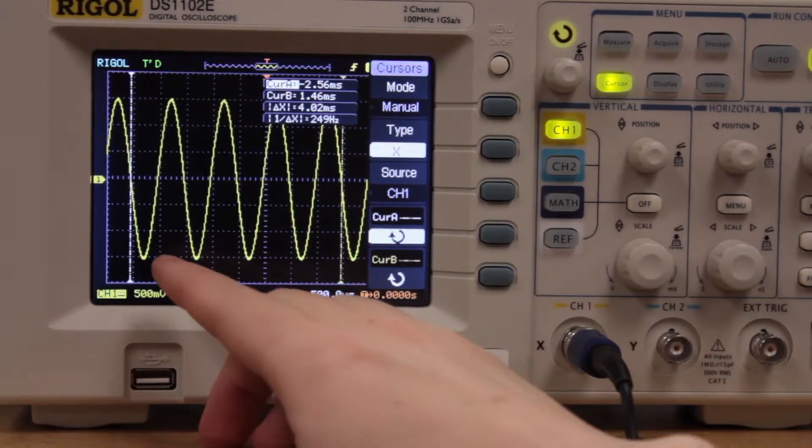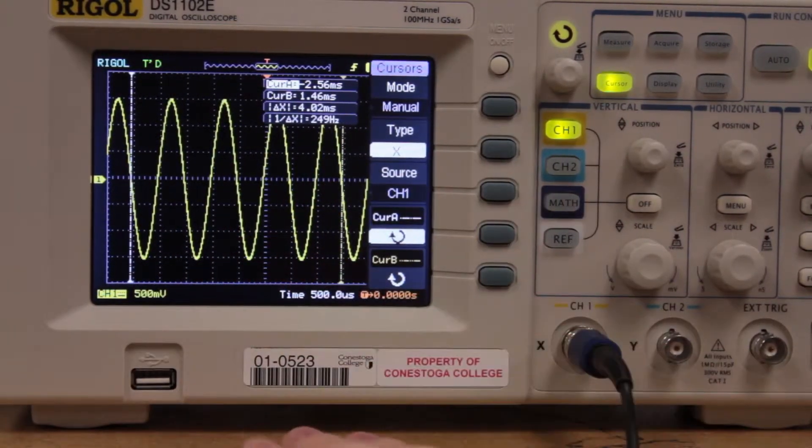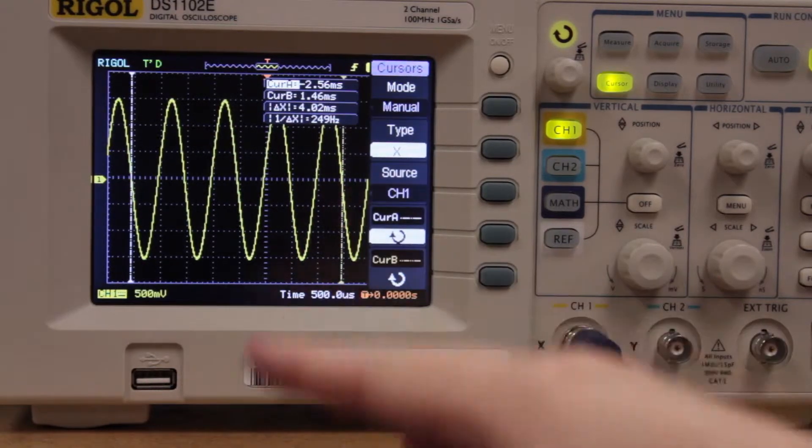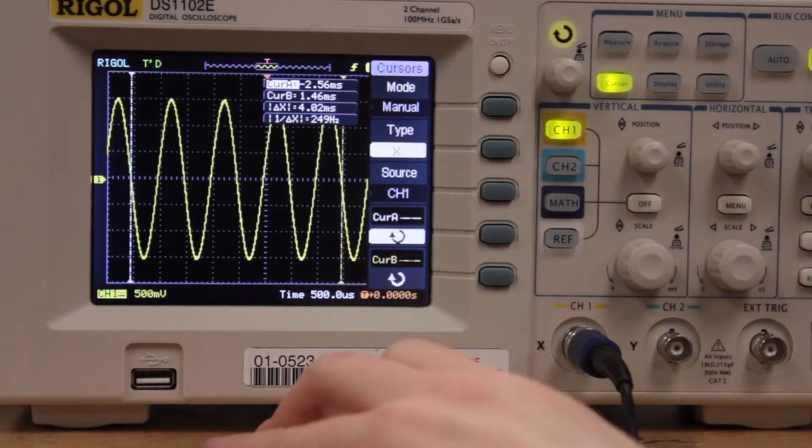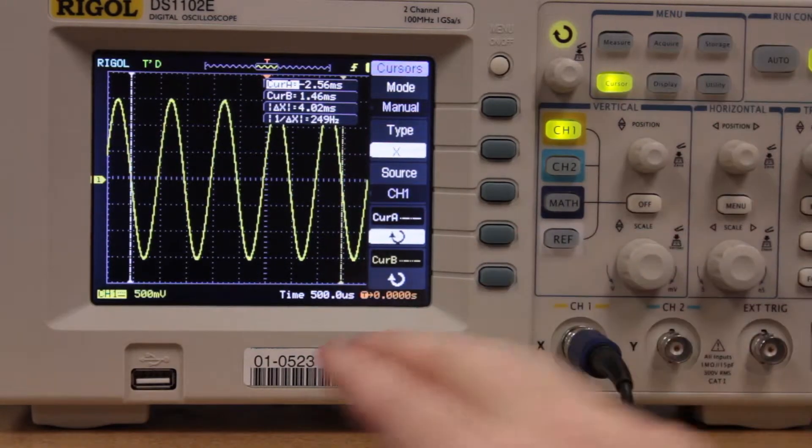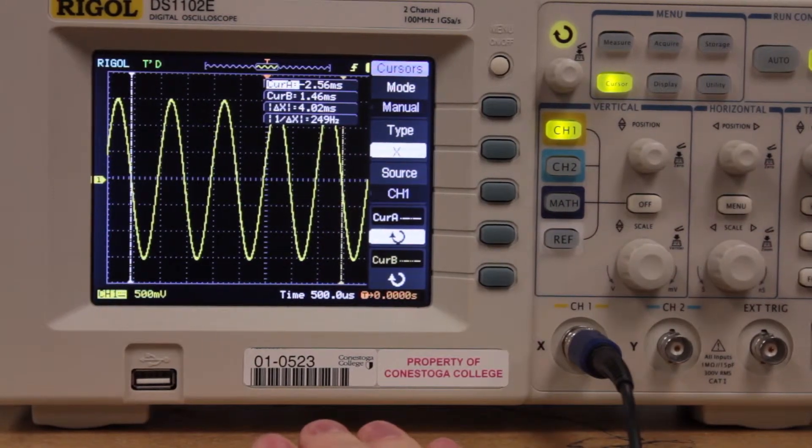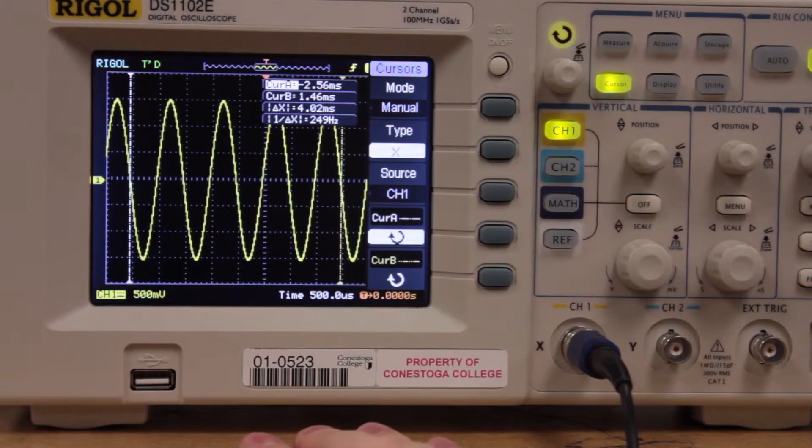Right here we have 4 full wavelengths and we're going to divide the period by 4 to actually get an average measurement here. And there's another method that we'll cover next on how to do this.